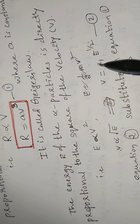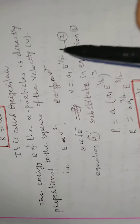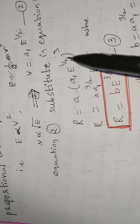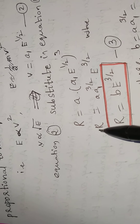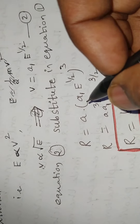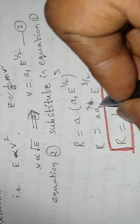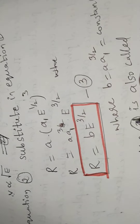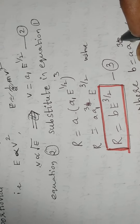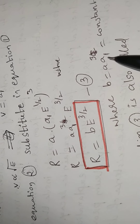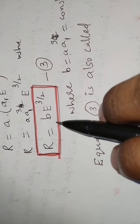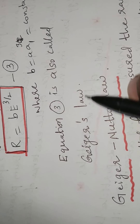Removing the proportionality: v = a₁·E^(1/2). Substituting into equation 1, R = a·(a₁·E^(1/2))³, which gives R = a·a₁³·E^(3/2). Setting b = a·a₁³ as a constant, equation 3 becomes R = b·E^(3/2). This is also called Geiger's law. So Geiger's law has two forms: the range is proportional to the cube of the velocity, and the range is proportional to E^(3/2).